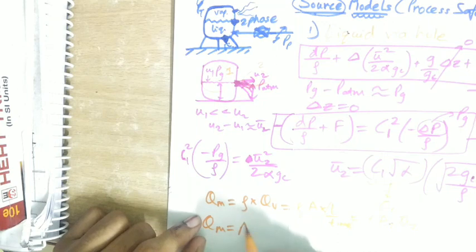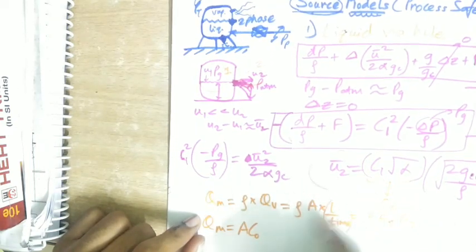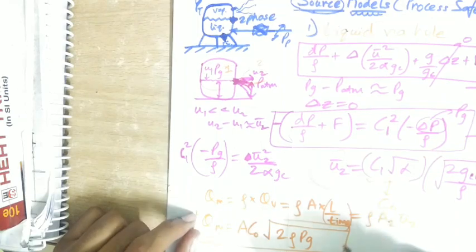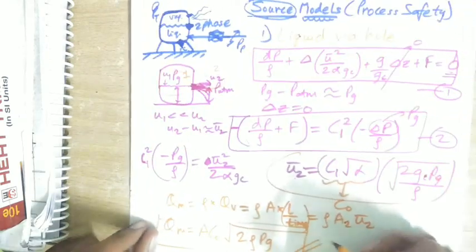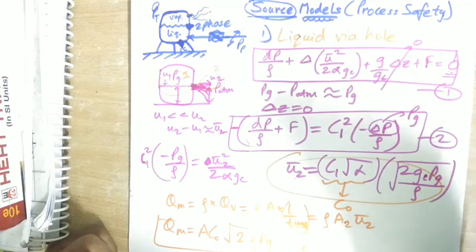qₘ = A · C₀ · ρ in the square root with Pg. This is our required maximum mass flow rate. Hope you like the video. We will do more cases and more source models in the next videos. Thank you.